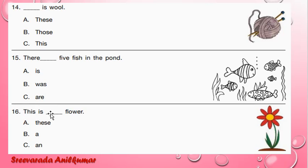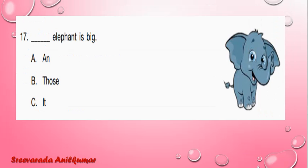This is dash flower — the correct answer is 'This is a flower.' B is the correct choice. A is the article we will use for that. Dash elephant is big — elephant starts with a vowel, E, so we would use 'an.' A is the correct option.